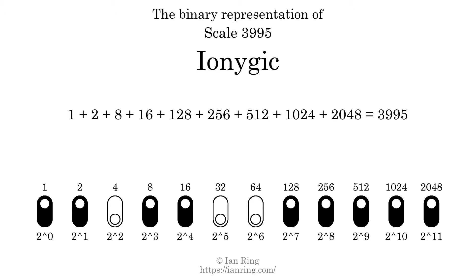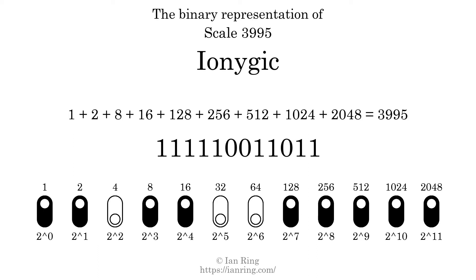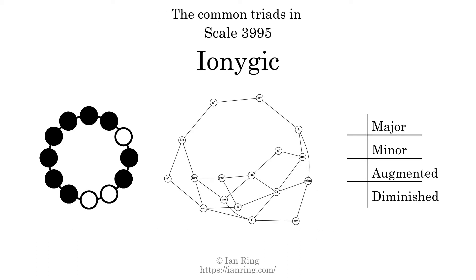The scale number not only enumerates the scale with a unique index, but it also literally describes the tonal content of the scale. Represented as a binary number in base 2, the scale number is 1, 1, 1, 1, 1, 0, 0, 1, 1, 0, 1, 1, 1. Here are the common triads present in this scale.